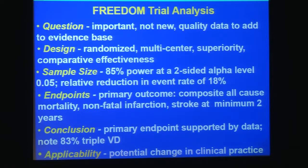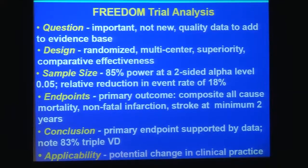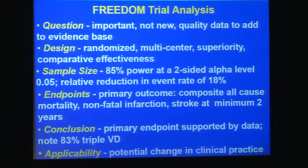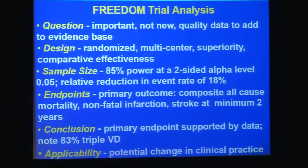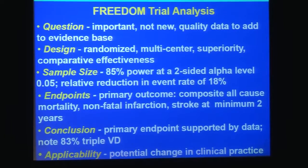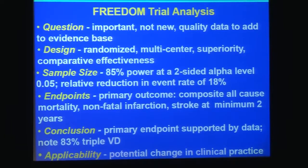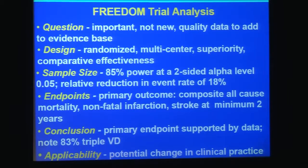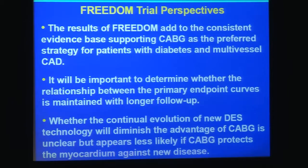The primary outcome — a composite of all-cause mortality, non-fatal MI, and stroke at a minimum of two years — was an appropriate endpoint, particularly given that prior studies showing CABG advantage were largely driven by a decrease in repeat revascularization. The conclusion in terms of the primary endpoint is supported by the data, noting that 83% of patients had triple-vessel disease and less than 20% had double-vessel disease. The trial has the potential to change clinical practice.